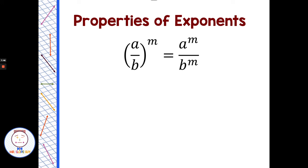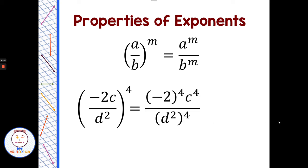If we have a fraction inside parentheses with an exponent on the outside, that exponent applies to each coefficient and variable in the numerator, and to each coefficient and variable in the denominator. For example, negative 2c over d squared, all to the fourth power — the 4 applies to the negative 2, to the c, and to the d squared. Negative 2 to the fourth is 16. c to the first times 4 gives c to the fourth. d squared to the fourth — power of a power — gives d to the eighth. So the answer is 16c to the fourth over d to the eighth.